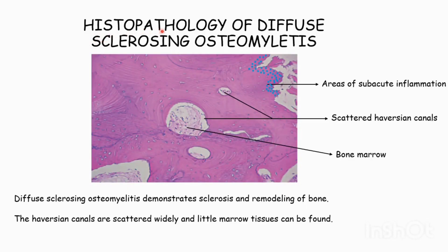Histopathology of diffuse sclerosing osteomyelitis. Diffuse sclerosing osteomyelitis demonstrates both sclerosis and remodeling of bone. The Haversian canals are scattered widely and little marrow tissue can be found in them.